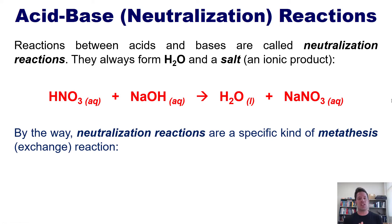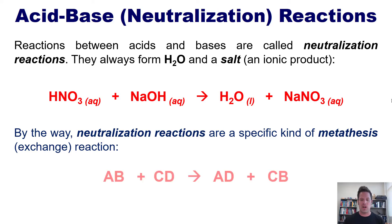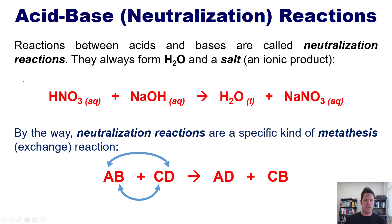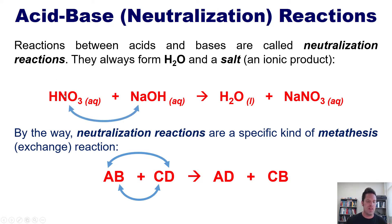You might notice that neutralization reactions are a specific type of metathesis, or exchange reaction, as discussed in earlier videos. An exchange reaction is one in which there is a partner swap — one cation swaps partners with the anion from the other compound and vice versa. The sodium, which is the cation in the compound on the right, gets together with the nitrate, the anion in the compound on the left, to form sodium nitrate.